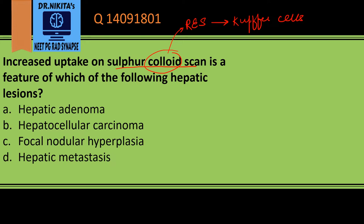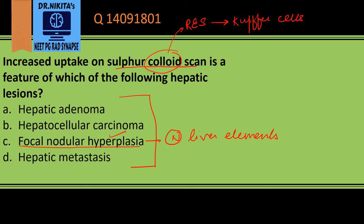Out of these options, we need to know which of these contains Kupffer cells, and it is focal nodular hyperplasia. As the term says, it is hyperplasia, so it contains normal liver elements — hepatocytes, Kupffer cells, bile ducts, etc. The liver elements are normal but the architecture is lost, so it is disorganized. This contains Kupffer cells, that is why it will show uptake on colloid scintigraphy.